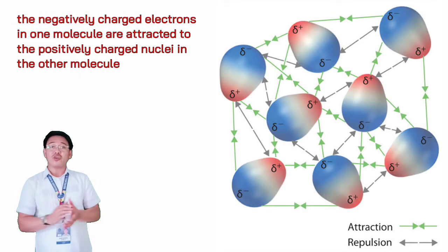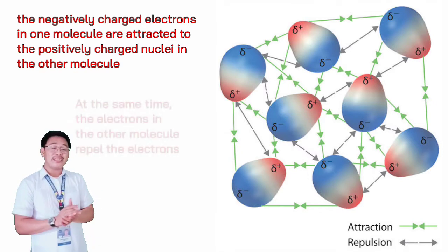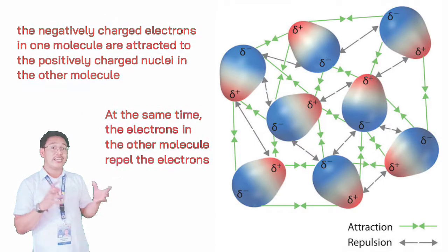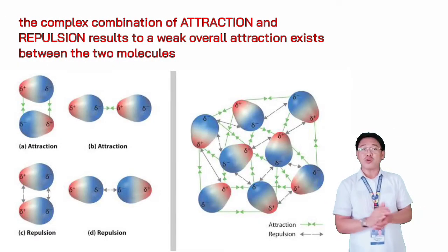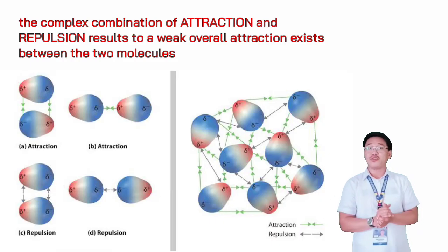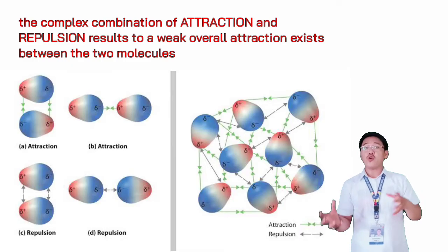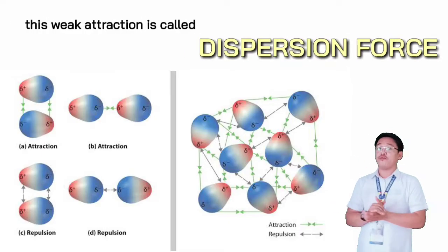As two molecules approach each other, the negatively charged electrons in one molecule are attracted to the positively charged nuclei in the other molecule. At the same time, the electrons in the other molecule repel these electrons. This complex combination of attraction and repulsion can result in the temporary distortion of the electron cloud around one molecule, so that a weak overall attraction exists between the two molecules. This weak attraction is called the dispersion force.